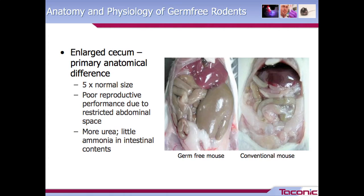An important anatomical difference between a germ-free mouse and conventional mouse — the same applying to rats — is that the germ-free animal has a very enlarged cecum, approximately five times the normal size. Due to this, reproductive performance may be limited because of the restricted abdominal space. Another important thing to note is that germ-free animals produce more urea, with little ammonia in the intestinal contents because there's no microflora to break it down. We'll discuss the importance of that when it comes to environmental monitoring under the guide.